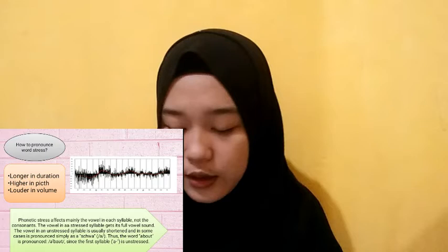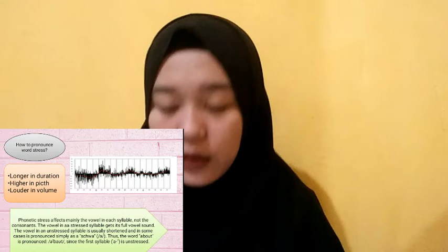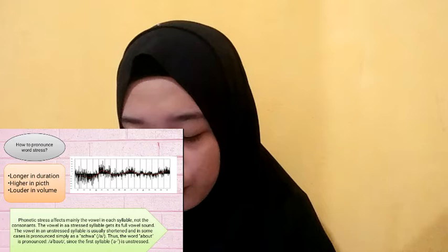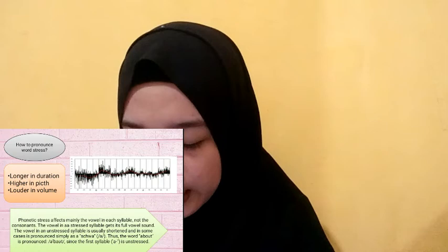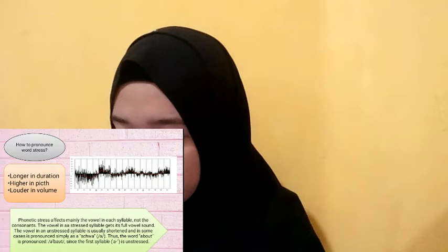How to pronounce word stress: stressed syllables are longer in duration, higher in pitch, and louder in volume. Phonetic stress affects mainly the vowel in each syllable, not the consonant. The vowel in a stressed syllable gets its full vowel sound, while the vowel in an unstressed syllable is usually shortened and in some cases pronounced simply as a schwa. Thus the word 'about' is pronounced 'about' since the first syllable is unstressed.